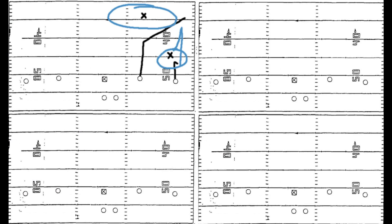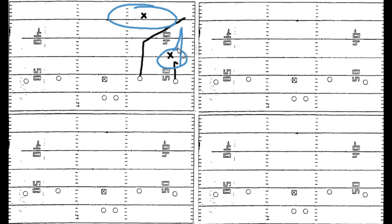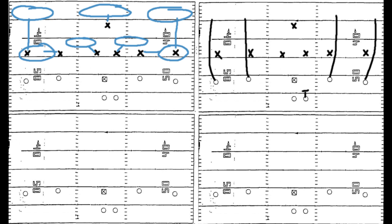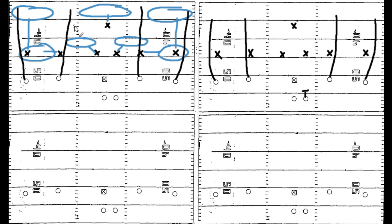It's absolutely vital that we have these adjustments to help cover concepts that normally destroy our coverages. Against man, we need to cover rubs. With cover two, we have to cover smash — using the eyes-and-body technique. The last one we're going to talk about is cover three, and specifically four verticals. With four verticals, our corners end up pretty much man-to-man with the outside receivers going deep, and we get two seam routes that horizontally stretch our deep middle safety. He has the hardest time covering both routes — the quarterback will look him off or pump fake to one and throw to the other. One of them will almost always be open.